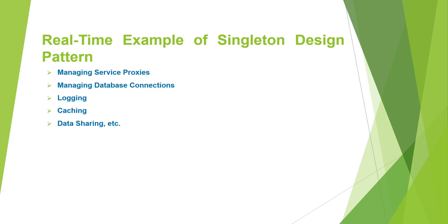Next, caching. Caching means, as you know, fetching data from a database is a time-consuming process. In your application, you can cache the master and configuration data in memory, which will avoid database calls. In situations like this, the singleton class can be used to handle caching with thread synchronization in an efficient manner, which can drastically improve the performance of your application.